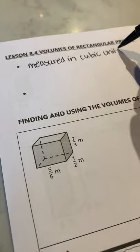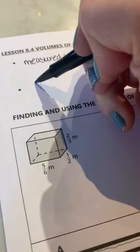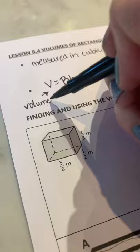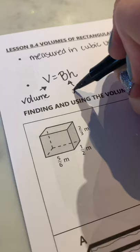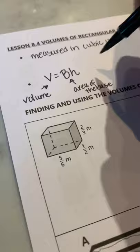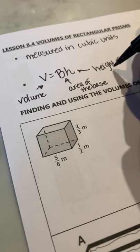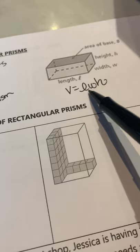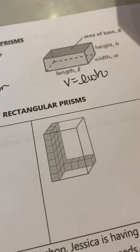And that in any kind of prism, the volume is represented by this formula. Obviously, this means volume. And when you're looking at a prism, this big B is area of the base. And then the H is the height of the prism. And the reason that length times width times height works is because this right here is how you would find the area of the base, length times width multiplied by the height of the prism. And so that's the formula that we'll be using to calculate volume.